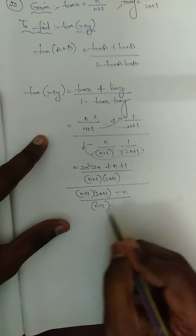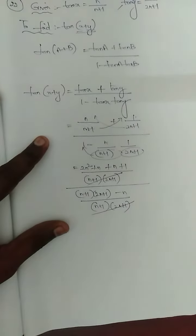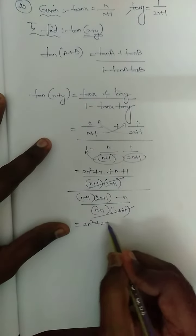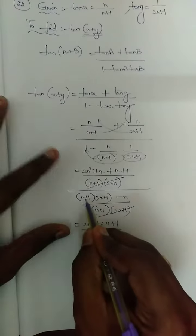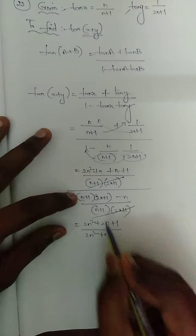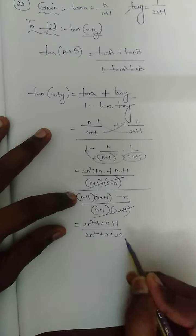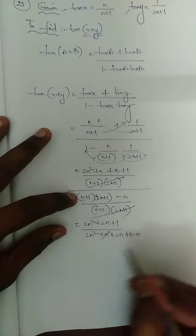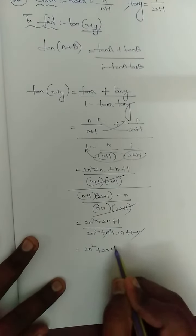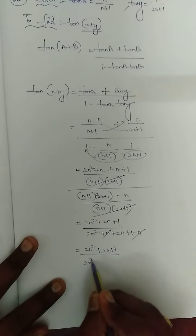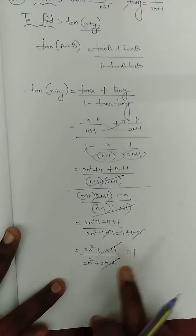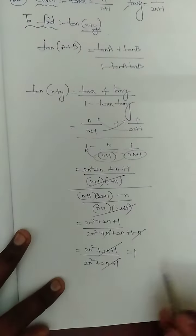The (n+1)(2n+1) terms cancel. Expanding (n+1)(2n+1): 2n² + n + 2n + 1 = 2n² + 3n + 1. Subtracting n gives 2n² + 2n + 1. The numerator also simplifies to 2n² + 2n + 1. Both cancel, so tan(x+y) = 1.